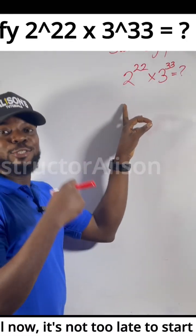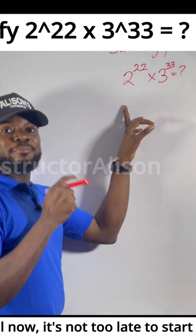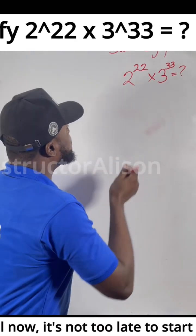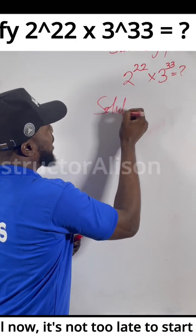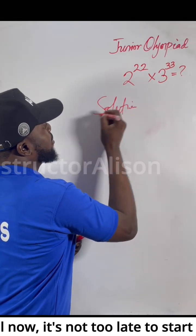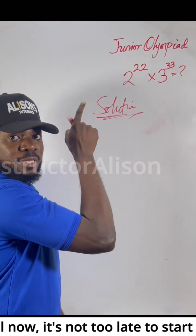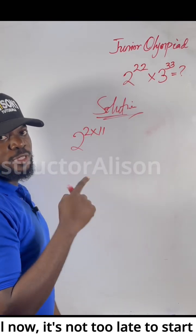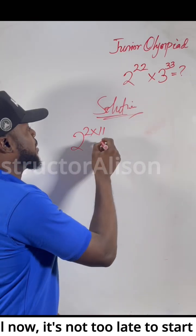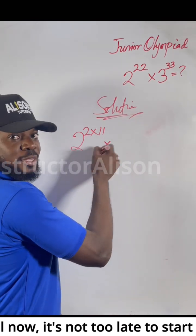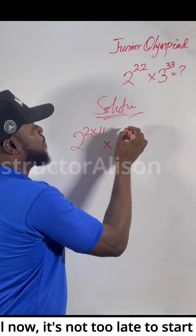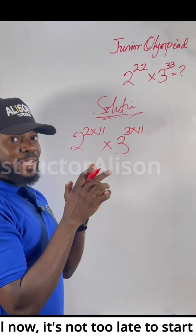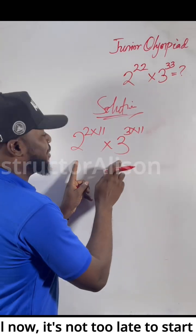Welcome everyone. For this particular question — pure mathematics — I want to show you how to simplify it. This question will be simple if you look carefully. If you see 22 up there, replace it with 2 times 11. Everybody knows that 2 times 11 equals 22. Now for the primary step, you may have done 3 to the power of 3 times 11. This is a trick — don't let your mind go there.